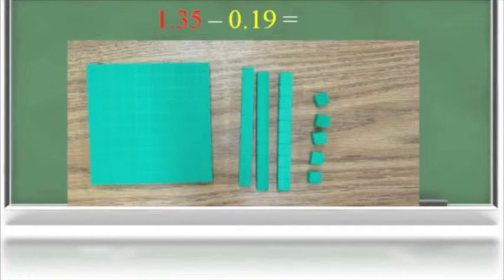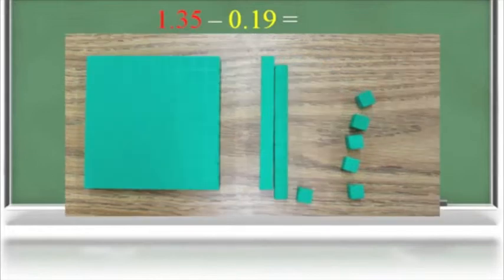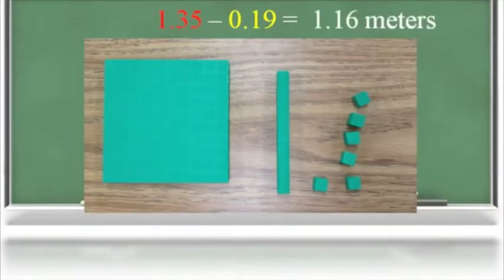They would not need to model the nineteen hundredths that they are subtracting. They would just remove this from their model. They do not have enough hundredths in their model to remove nine, the amount in the hundredths place. So they would need to regroup one of their tenths as ten hundredths. Using their understanding that each place value is ten times the place value to its right, this would give them a total of fifteen hundredths. Now they could remove or subtract the nine hundredths and then remove one tenth for a difference of one and sixteen hundredths meters.